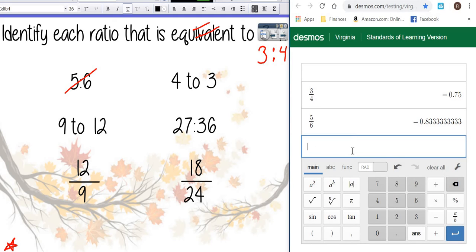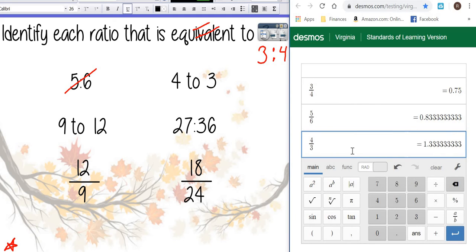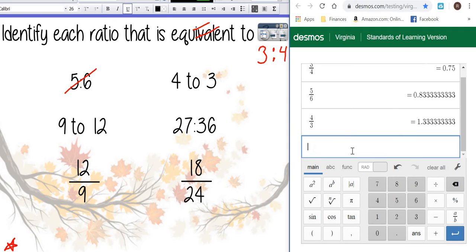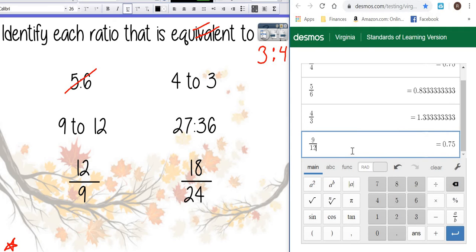I'm going to come back over here. We're going to do four divided by three definitely does not match. Let's try nine divided by twelve. That gives me the exact same number.